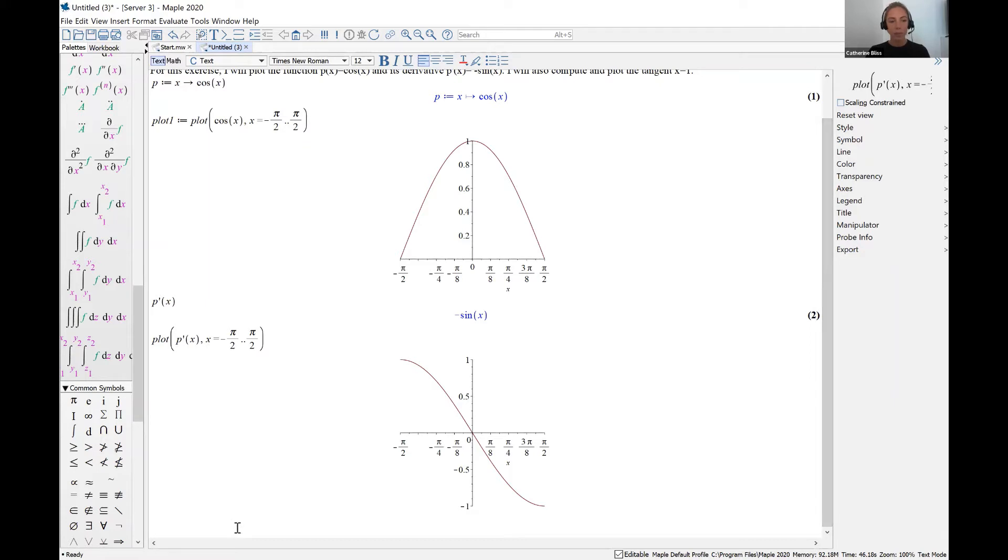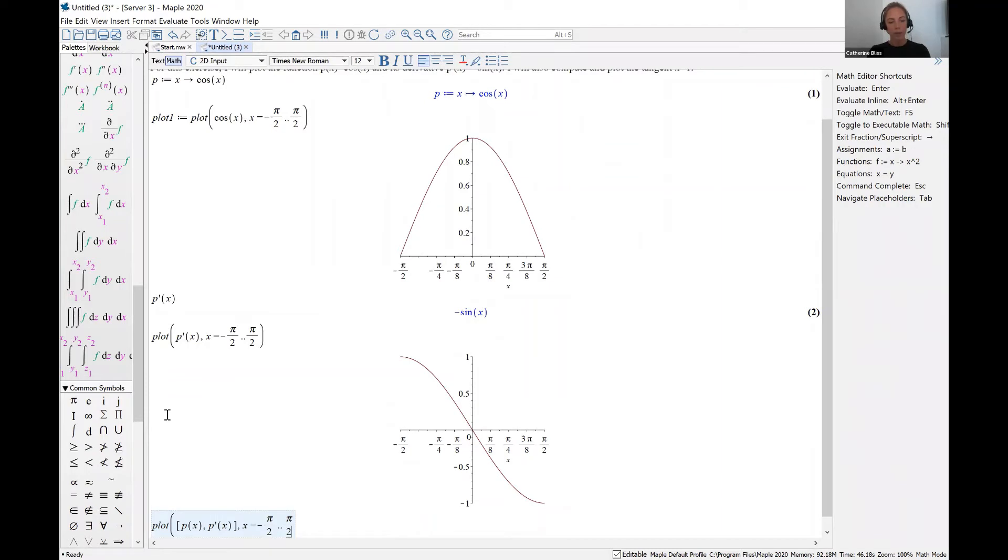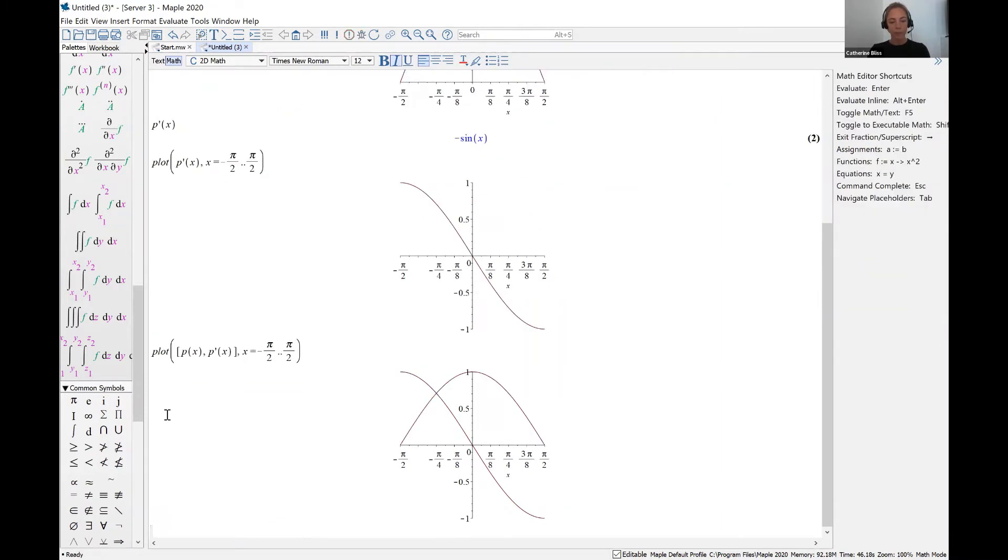Next, we could plot both the function and the derivative on the same set of axes. To do this, I'll be in math mode. I'll type plot, and then I'll use square brackets to let Maple know that I've got more than one item to plot. I'll plot p of x, as well as p prime of x, close square bracket. Those are the two functions I'm going to put on this plot. I'll plot that as x goes from negative pi over 2 to pi over 2. And now we have both curves on the same set of axes.